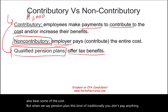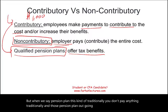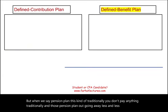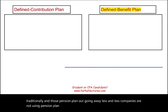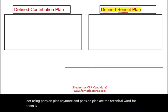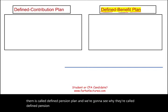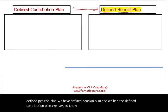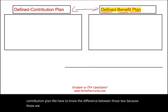The technical term for traditional pension plans is called a defined benefit plan. We also have a defined contribution plan. We need to know the difference between those two because they are two very different things. They sound similar, but they're not similar at all.